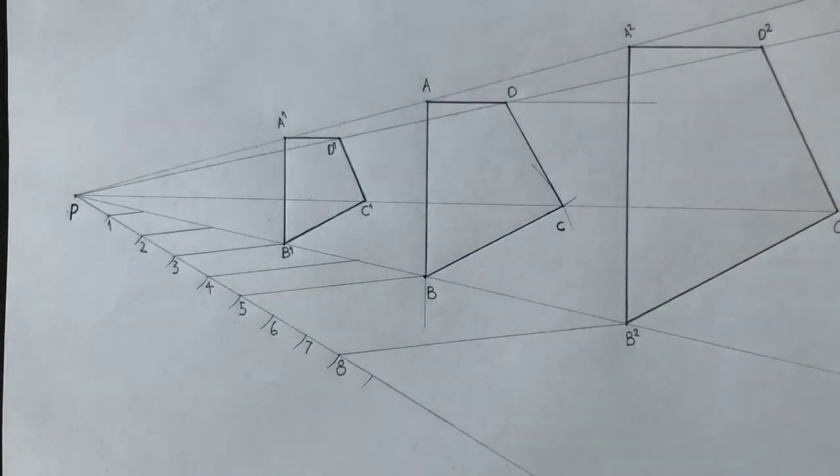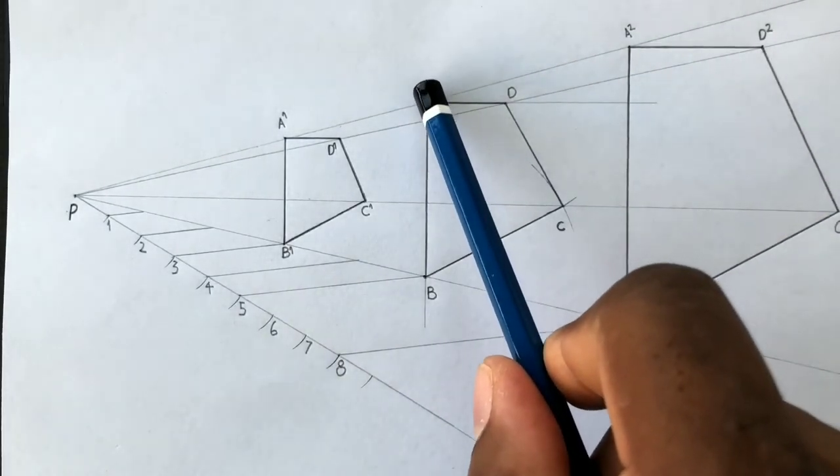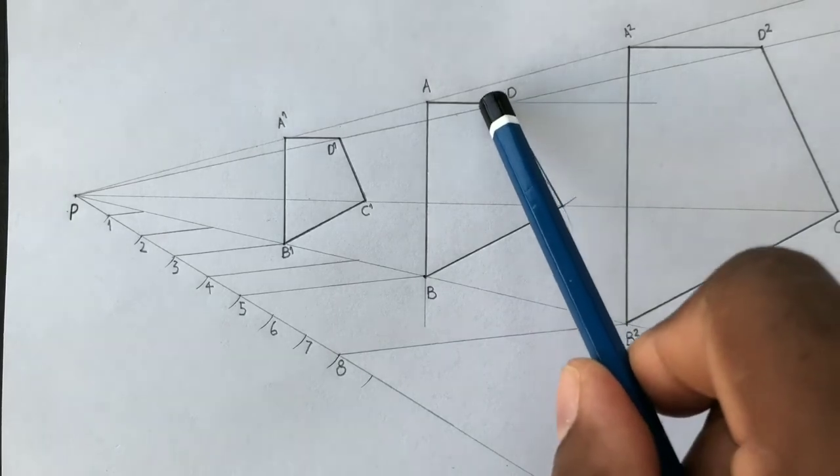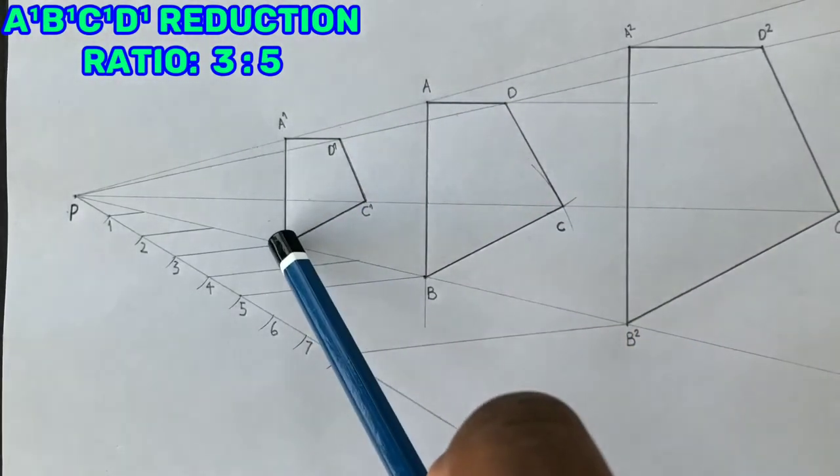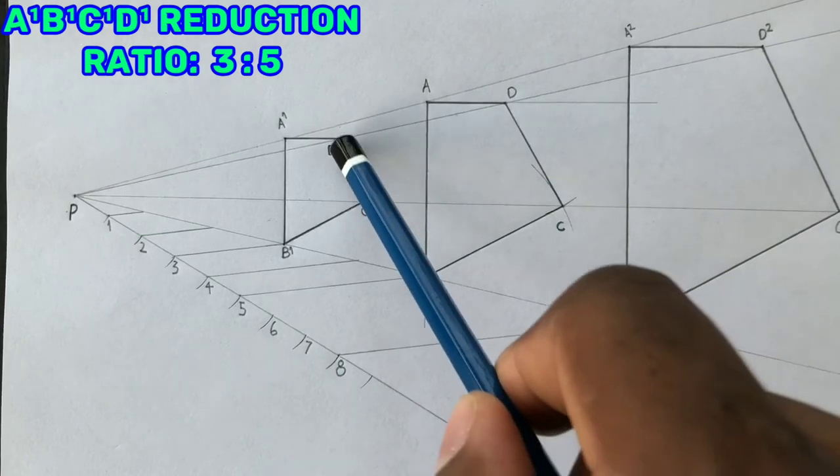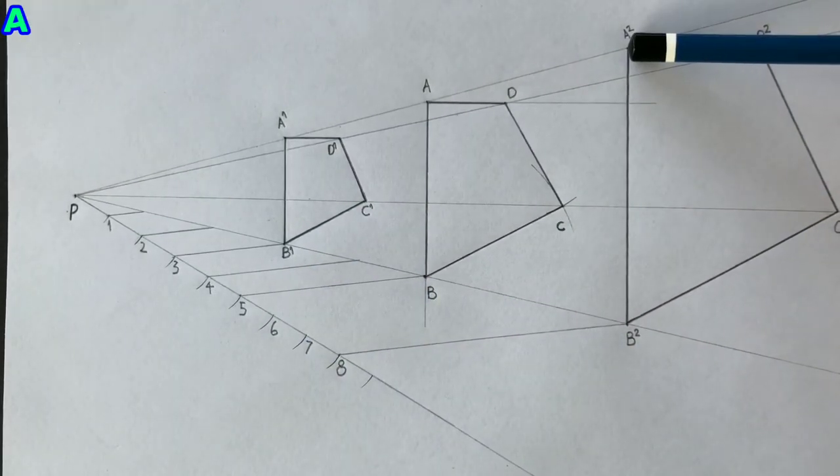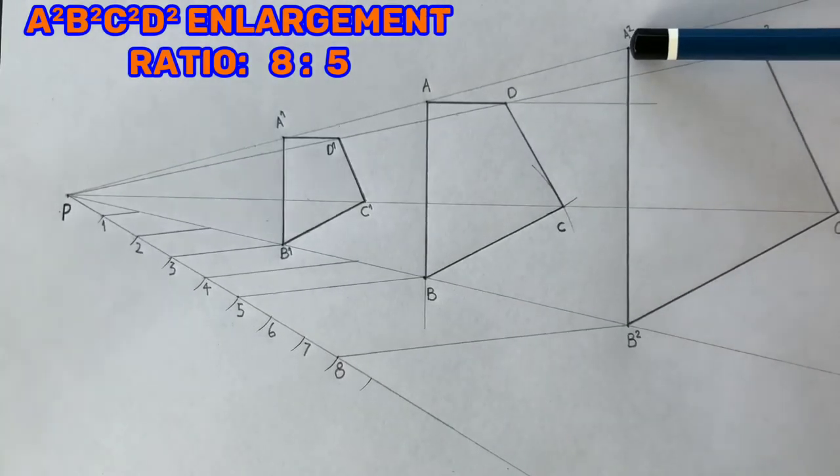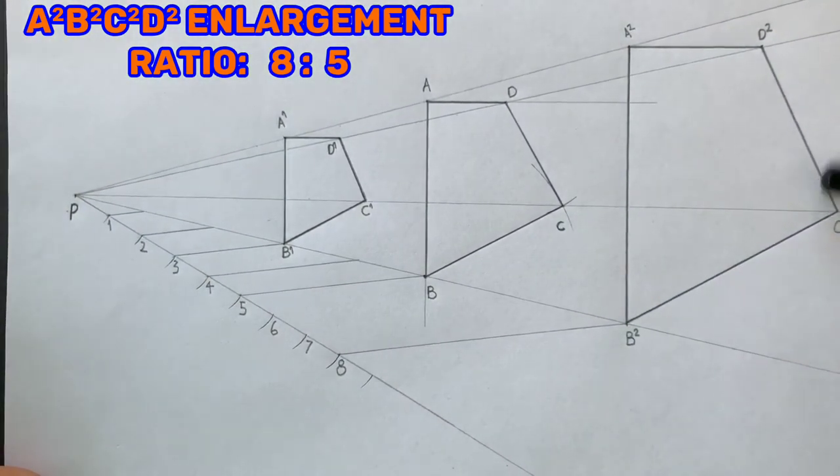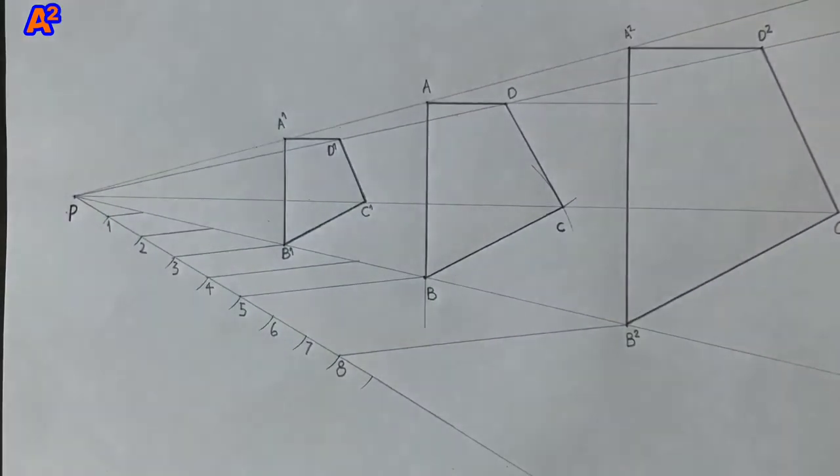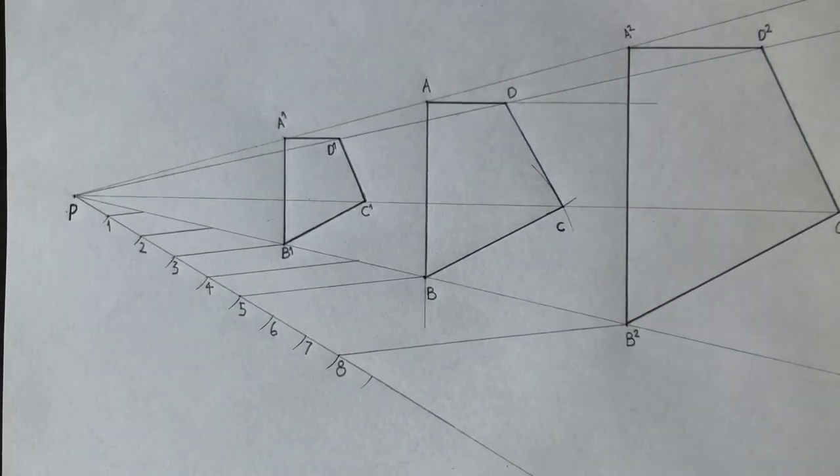Now your given quadrilateral A2, B2, C2, D2. Now border your paper and complete your title block.